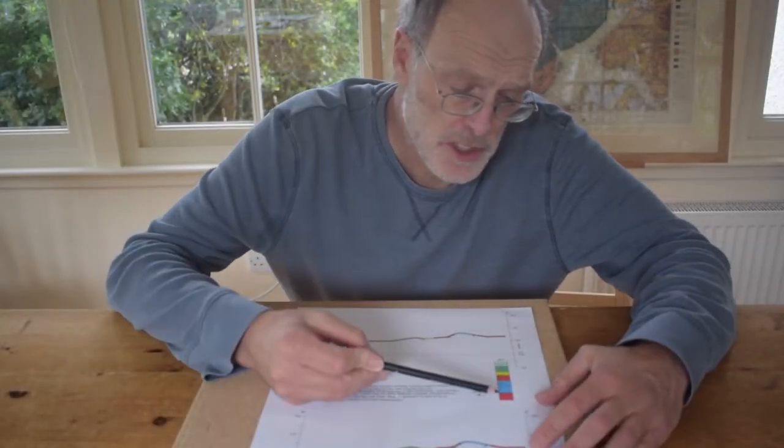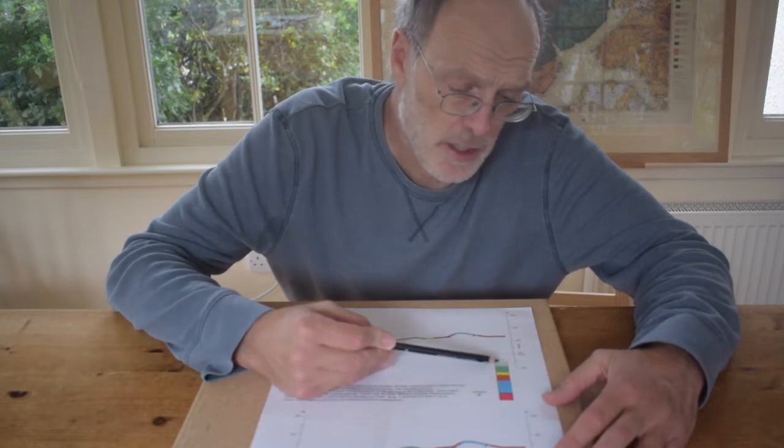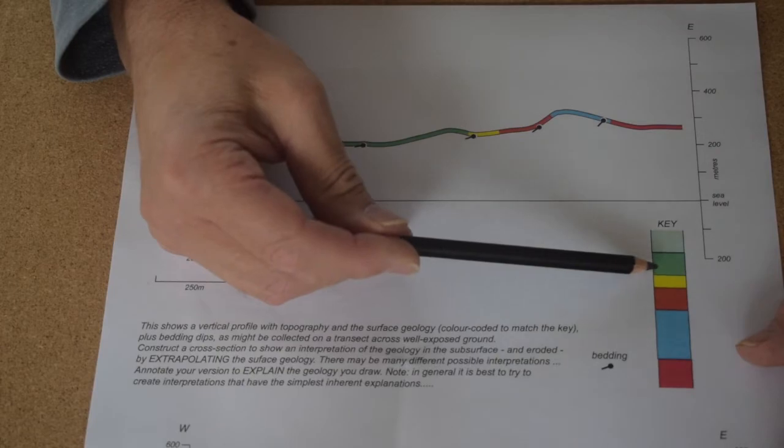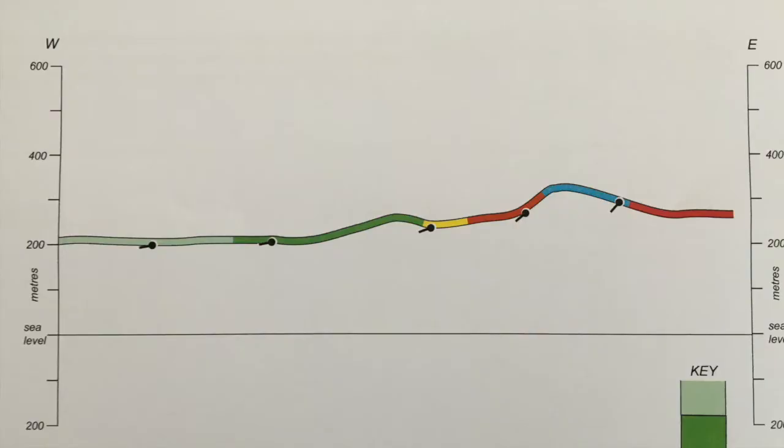The rock sequence is shown by this colour bar which has red, blue, orange, yellow, dark green and light green in ascending stratigraphic order.